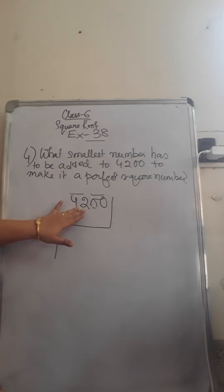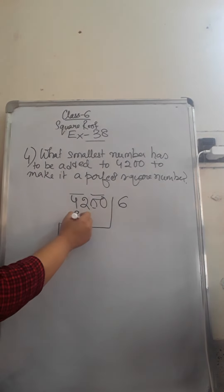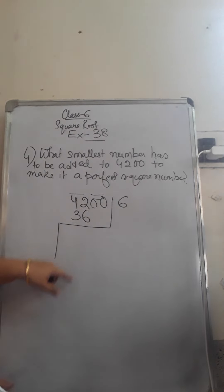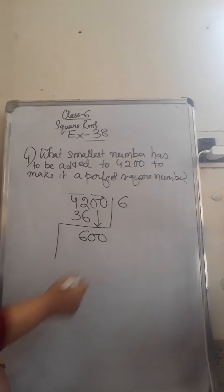Now 42, which two similar numbers when multiplied gives nearest? 6 times 6 is 36, 7 times 7 is 49, exceeds 42. So we will take 6 times 6 is 36. The remainder is 6 over here and take down both the numbers at a time.